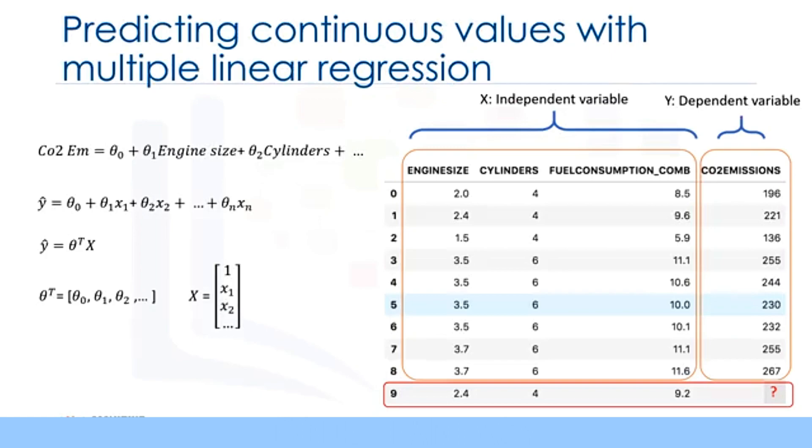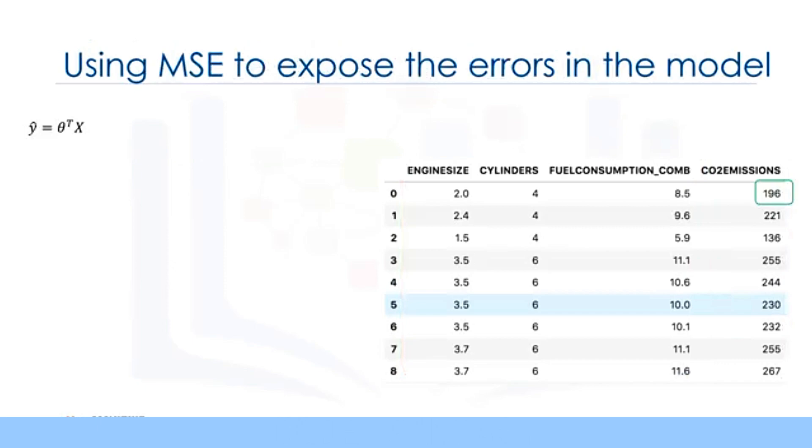To this end, and as is the case in linear regression, we should estimate the values for theta vector that best predict the value of the target field in each row. To achieve this goal, we have to minimize the error of the prediction. Now the question is, how do we find the optimized parameters? To find the optimized parameters for our model, we should first understand what the optimized parameters are. Then we will find a way to optimize the parameters. In short, optimized parameters are the ones which lead to a model with the fewest errors.